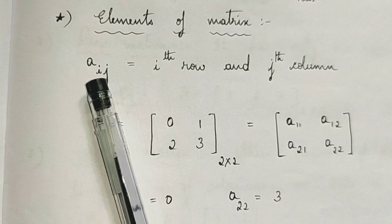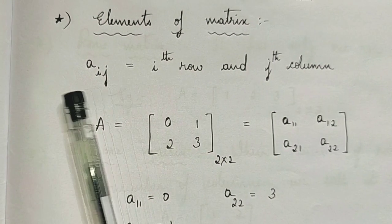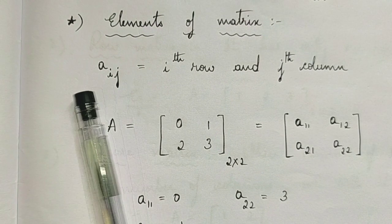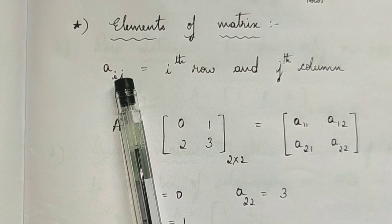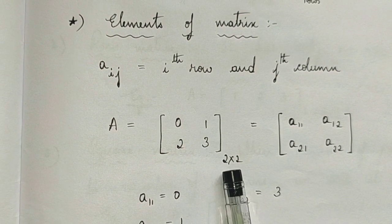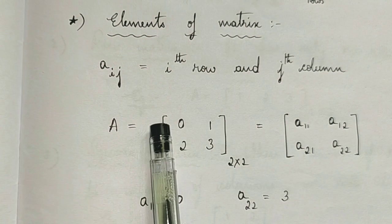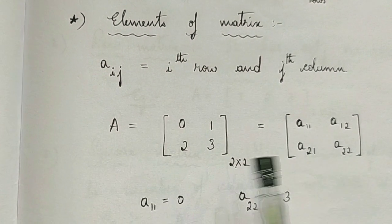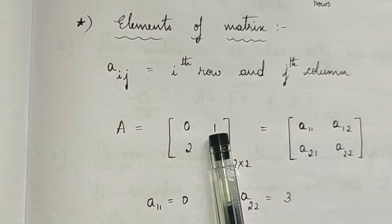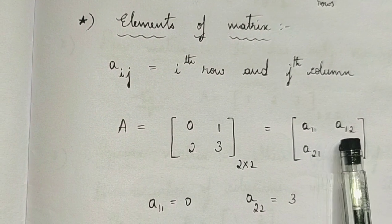The next topic is elements of a matrix. Aij equals the element at the i-th row and j-th column. This means we represent each element this way, where i and j denote the row and column position. We will understand this better using an example. We have a matrix of order 2 cross 2. The first element is in position first row, first column — so that is a(1,1). Next is first row, second column — so a(1,2).